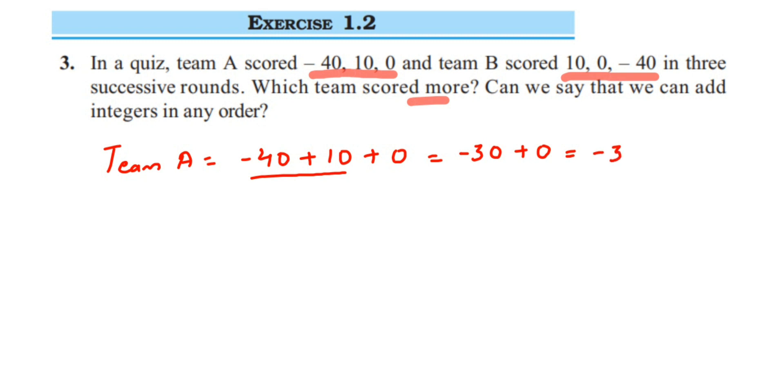Now team B. First we have 10, then 0, then -40. So I'm going to first add the first two integers: 10 + 0 is 10. So 10 + (-40). Here you're adding an integer with a different sign, so you have to subtract them. When you subtract, you will get 30, and 40 is greater, its sign is negative, so we'll get -30.